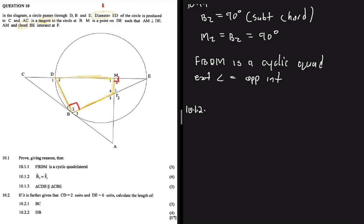Now let's move to 10.1.2, which asks us to prove that B3 equals F1. B3 is situated here on the diagram, and F1 is here. Going back to our keywords: the diameter tells us that B2 is 90 degrees, which doesn't help directly here, so let's move to the next keyword — tangent.